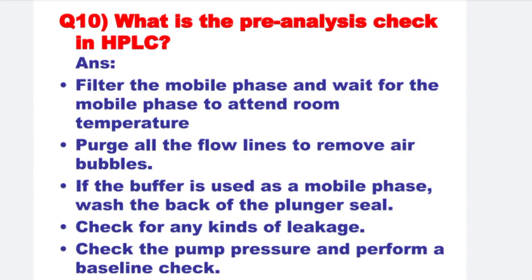Next: What is the pre-analysis check in HPLC? Filter the mobile phase and wait for the mobile phase to attain room temperature. Purge all the flow lines to remove air bubbles. If a buffer is used as a mobile phase, watch the back of the purge seal. Check for any kind of leakage, check the pump pressure, and perform a baseline check.